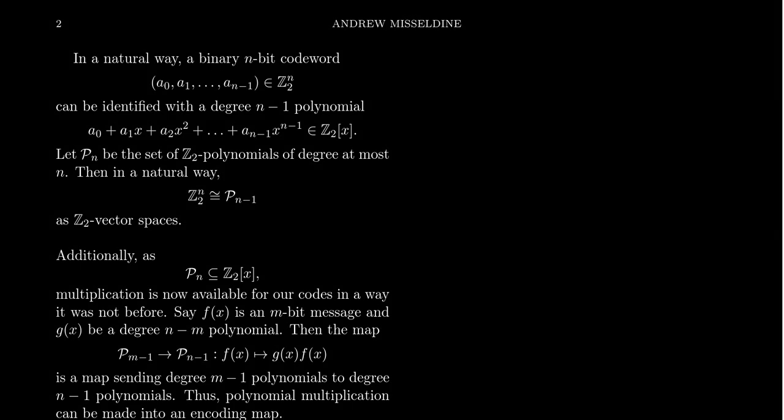In the beginning of our discussion of coding theory, we made the identification that if you take an n-bit sequence of 0s and 1s, that can be naturally identified as a vector in Z2^n.